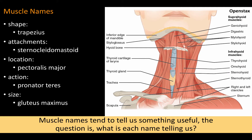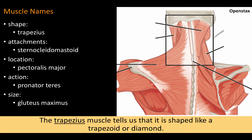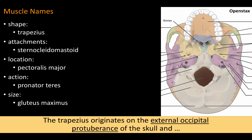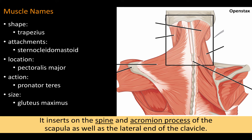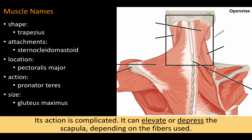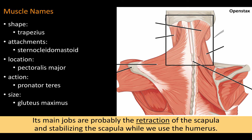Muscle names tend to tell us something useful. The trapezius muscle tells us that it is shaped like a trapezoid or diamond. The trapezius originates on the external occipital protuberance of the skull and the spinous processes of the first cervical to the twelfth thoracic vertebrae. It inserts on the spine and acromion process of the scapula, as well as the lateral end of the clavicle. Its action is complicated — it can elevate or depress the scapula depending on the fibers used. Its main jobs are probably the retraction of the scapula and stabilizing the scapula while we use the humerus.